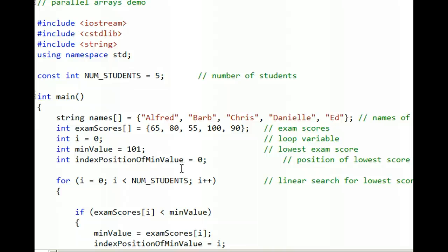Here's a program that illustrates the use of two parallel arrays. We have an array named Names. Its length is 5, because we have the word Alfred in position 0, Barb in position 1, and so on.